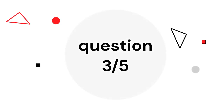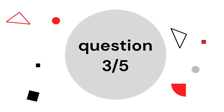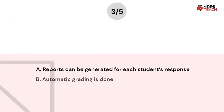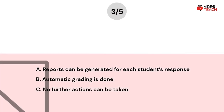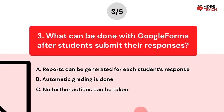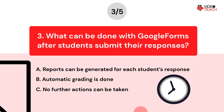Question number three. What can be done with Google Forms after students submit their responses? Option A: Reports can be generated for each student's response. Option B: Automatic grading is done. Option C: No further actions can be taken. Now you have about 15 seconds to think about your answer.